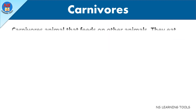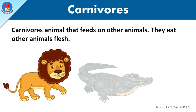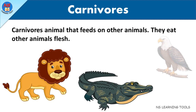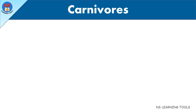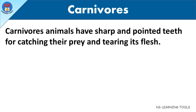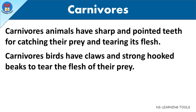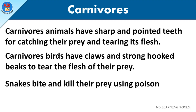Carnivores are animals that feed on other animals — they eat other animals' flesh. Here are a few examples of carnivore animals. Carnivore animals have sharp and pointed teeth for catching their prey and tearing its flesh. Carnivore birds have claws and strong hooked beaks to tear the flesh of their prey.